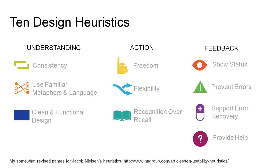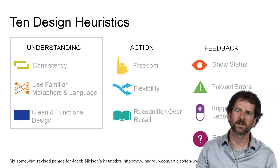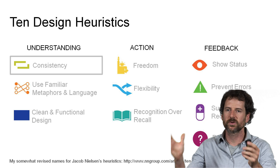We'll cover the heuristics in three groups: helping users understand your interface, helping users act, and providing feedback about what the system's done. Let's look at how you can make your interface more understandable. We build our mental representations and expectations based on experience, and for that reason it's important to be consistent — both within your software and with similar software that other users may have experience with.